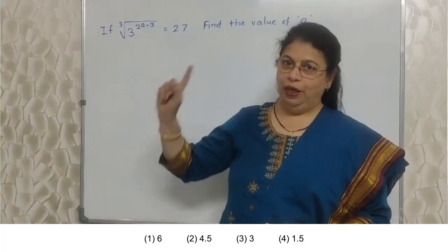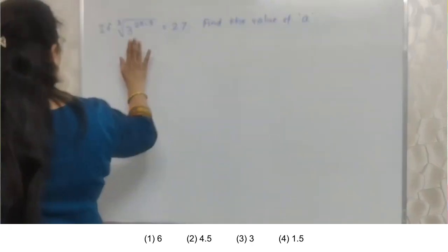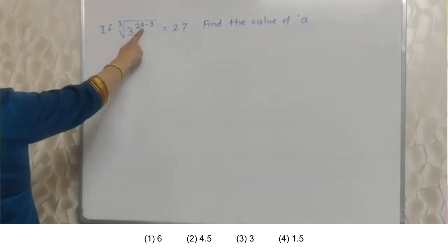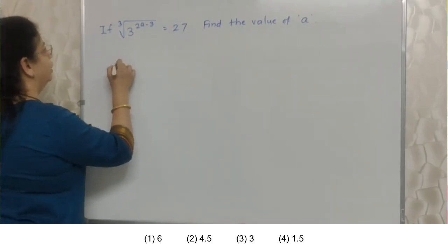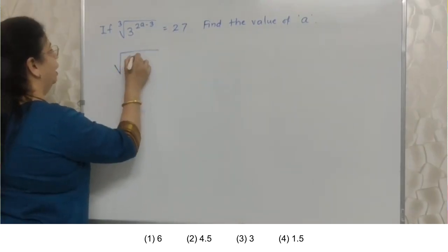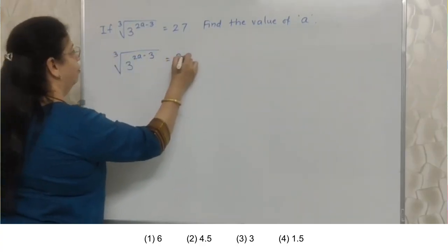Pahla sum maine board pe likha hai. We need to find the value of A, right? So I am rewriting this first. Whatever they have given us, this is what they have given us.